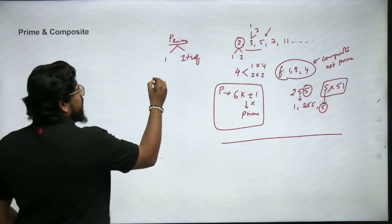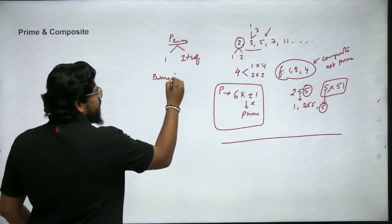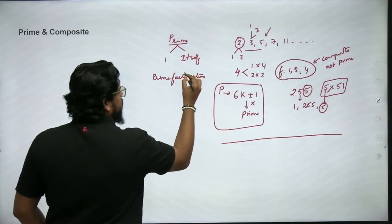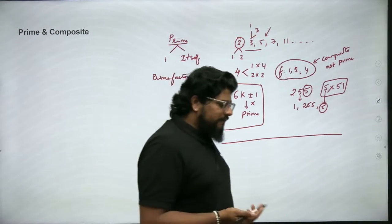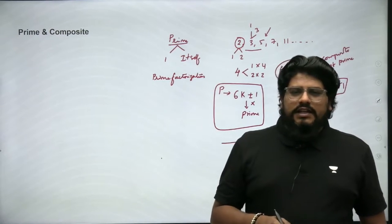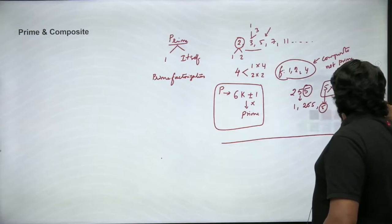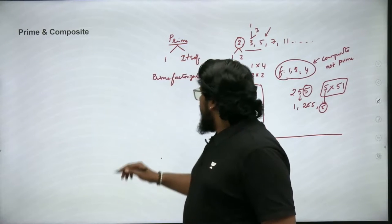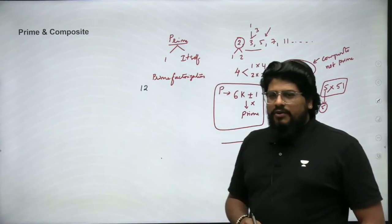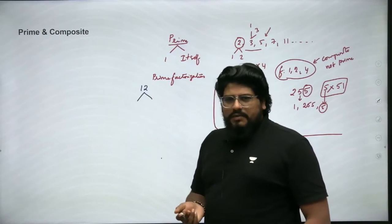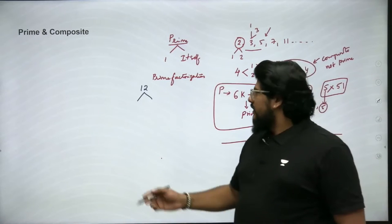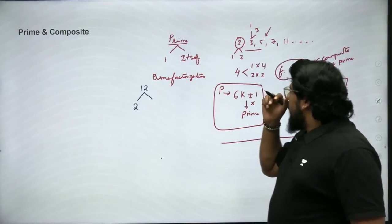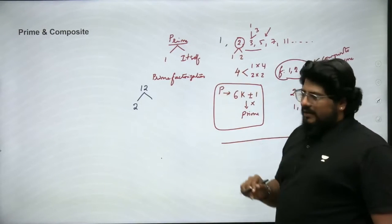Now let us move ahead and see what are the applications of prime and composite. The very first application is prime factorization. Prime factorization helps us understand what are the prime factors by which a number is composed. If we need to do prime factorization for 12, we start with the smallest possible prime number. The smallest possible prime number is 2.